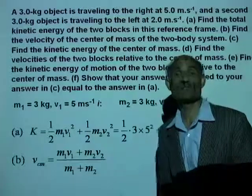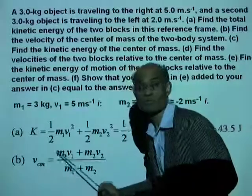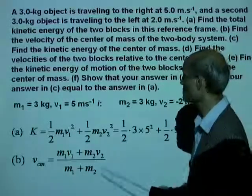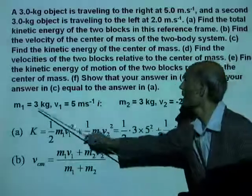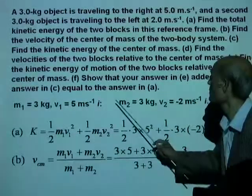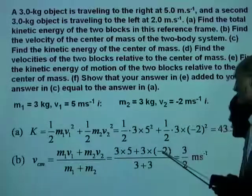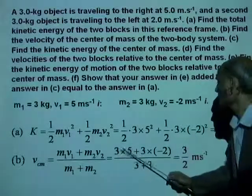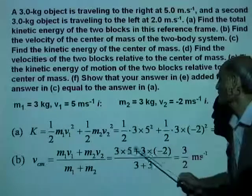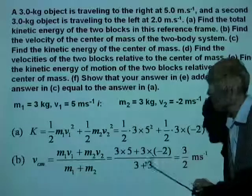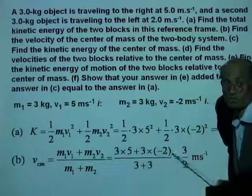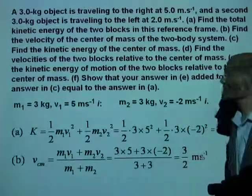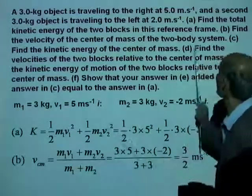Part B: what is the velocity of the center of mass? The velocity of the center of mass is M1V1 plus M2V2 divided by M1 plus M2. Using the values: M1V1 is 3 times 5, plus M2V2 is 3 times negative 2, divided by 3 plus 3. That will be 15 minus 6, which is 9, divided by 6, which is 3/2 meters per second. The velocity of the center of mass is 3/2 meters per second.